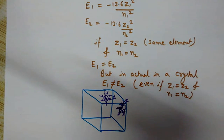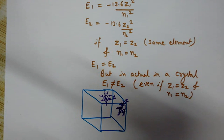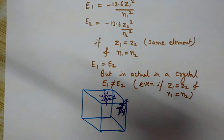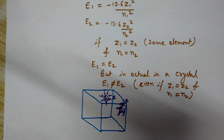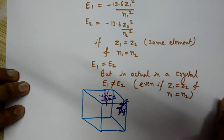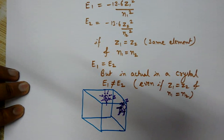So, electrons of different atoms in the crystal that are in the same orbit have a very close difference of energies. They make a band of energy having very close energies. Hence, an energy band is formed in the crystal.